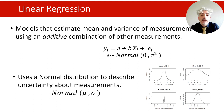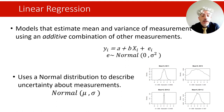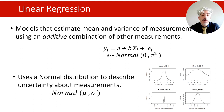Parameter a represents the value that outcome y takes when predictor x is equal to zero, so it is called the intercept. Parameter b represents the change in outcome y associated with one unit increase in predictor x, and it is called the slope. The parameter e is supposed to be normally distributed with mean zero and a variance that we can estimate. Linear regression uses normal distributions to describe uncertainty about measurements.